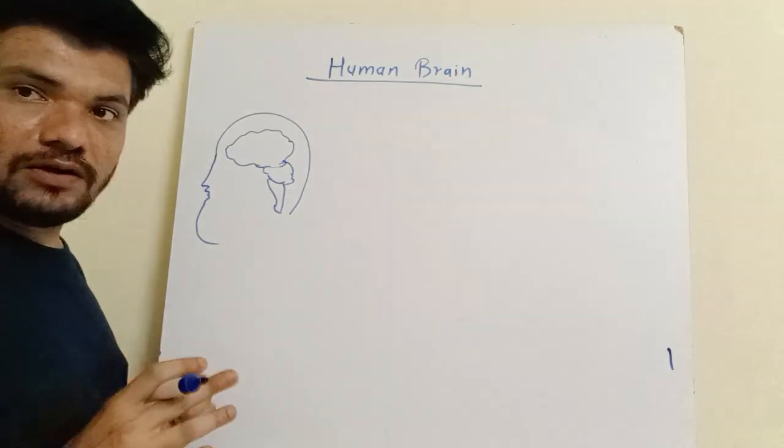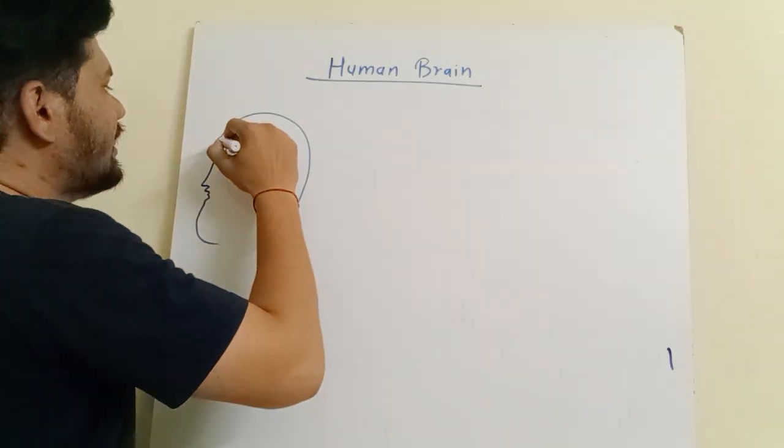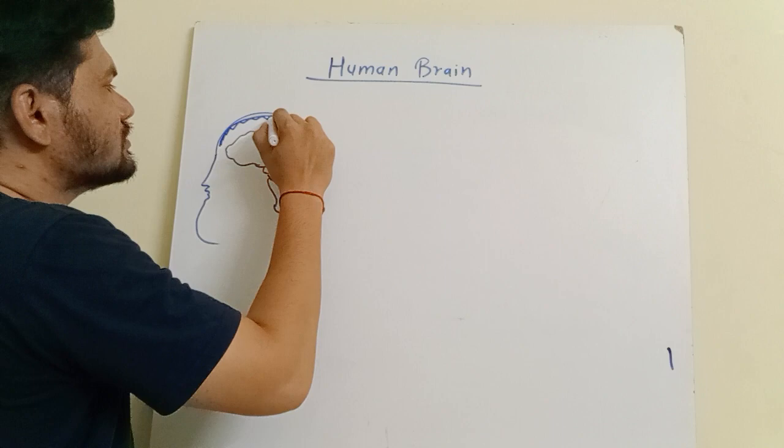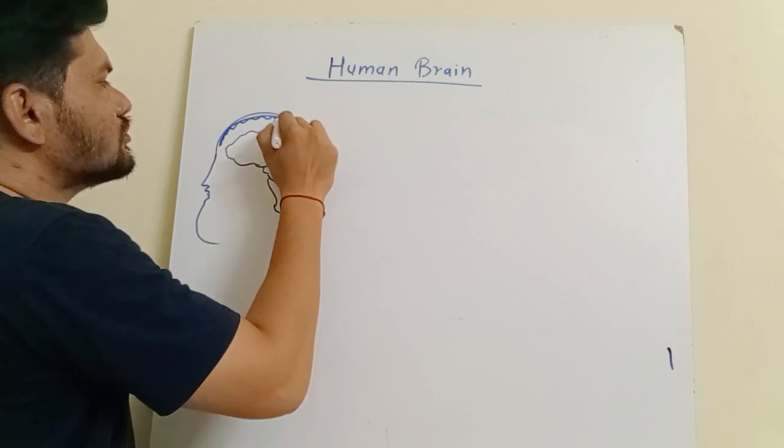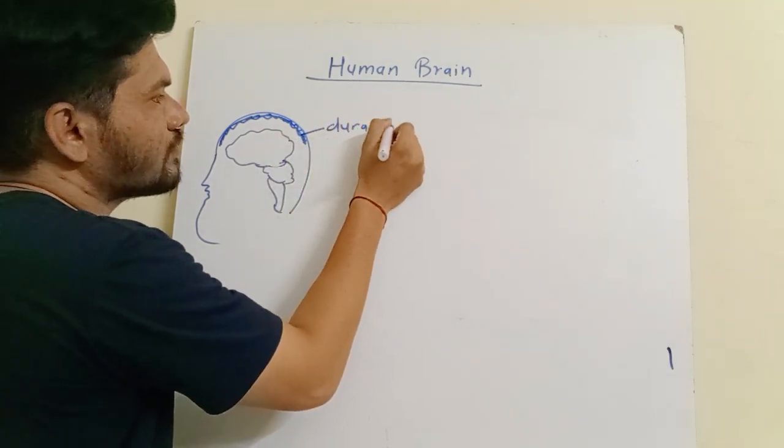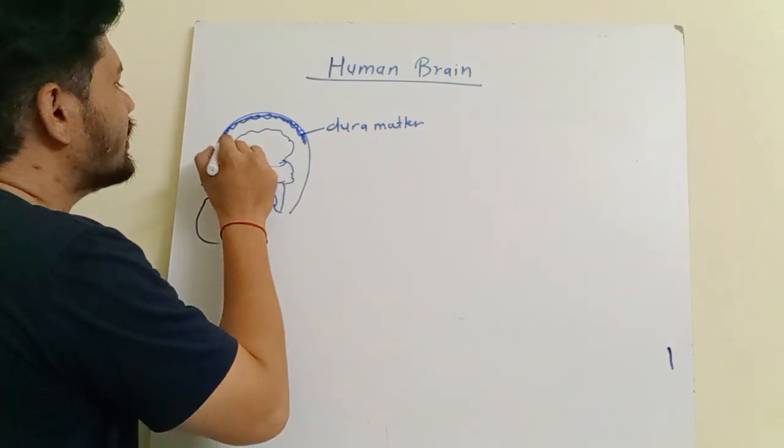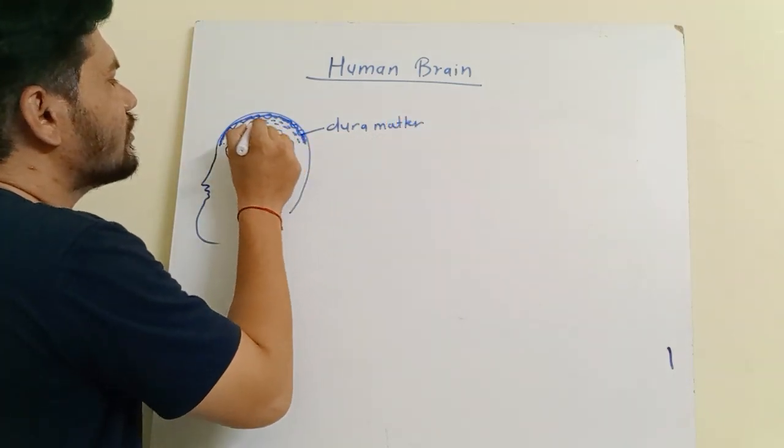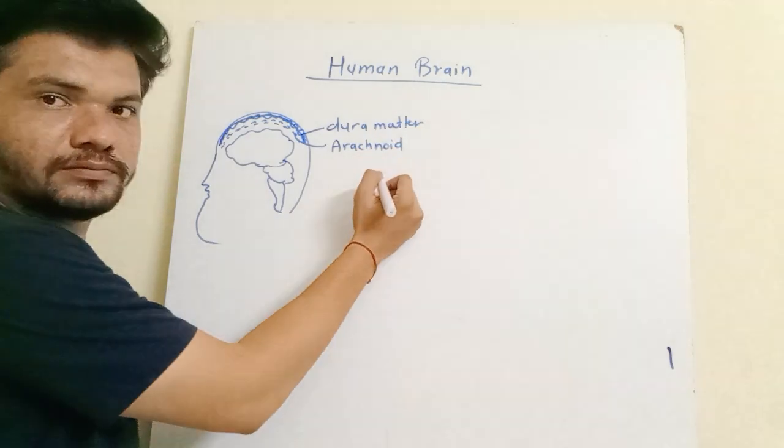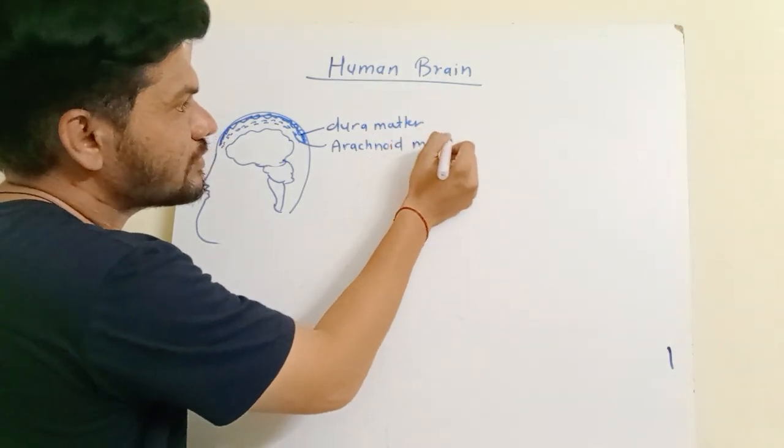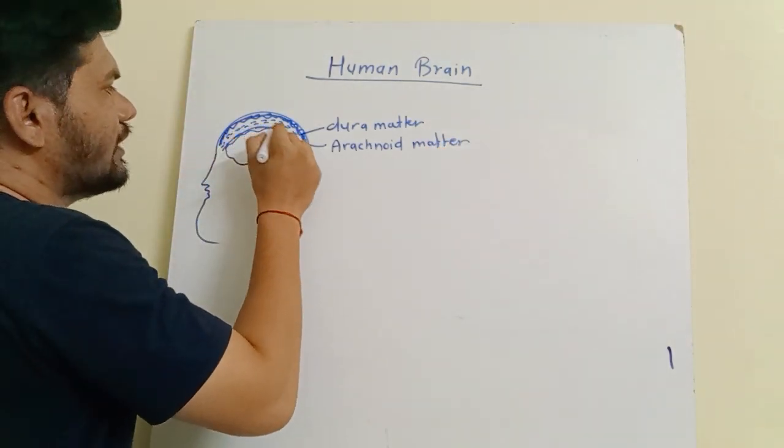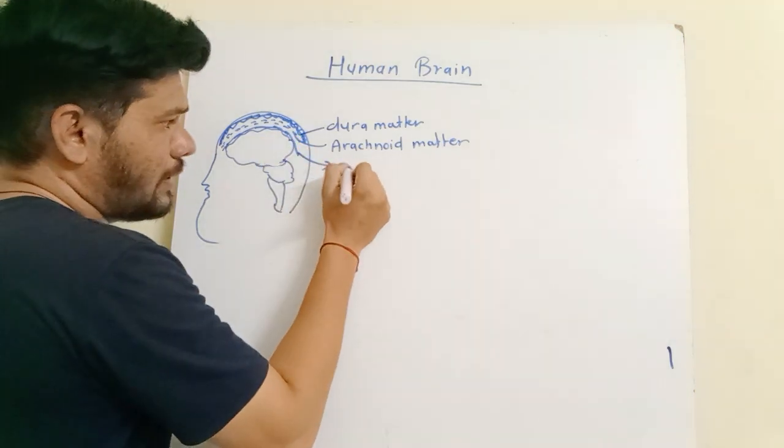It is covered by a three-layer tissue called cranial meninges. Suppose this is the outer layer which is called dura matter. Then this is the middle thin layer called arachnoid matter. Then the innermost layer which is in touch with the brain is called pia matter.